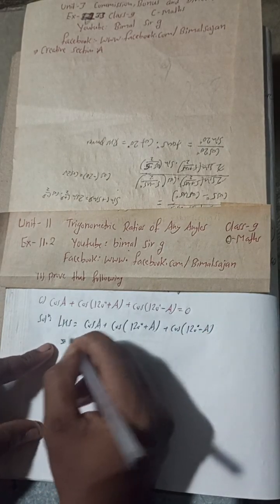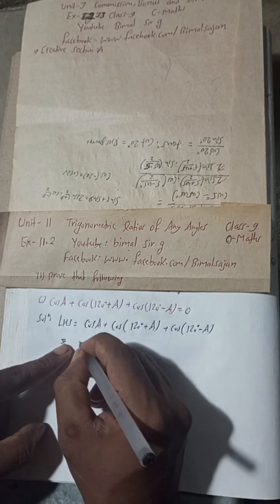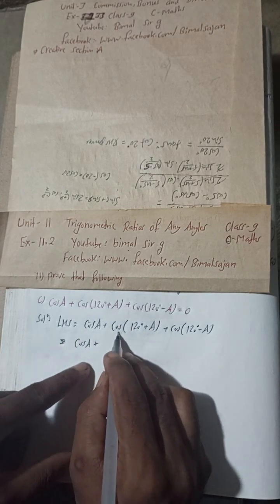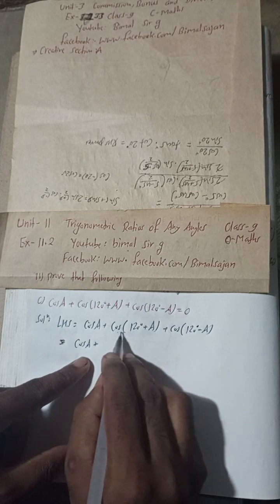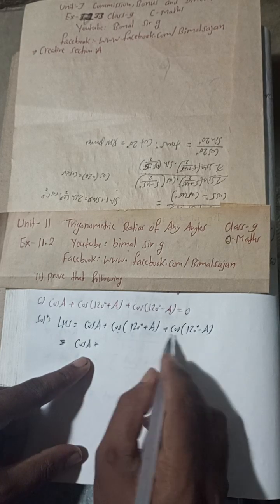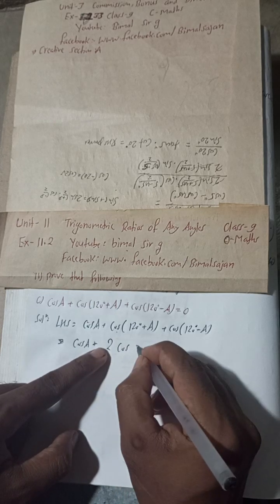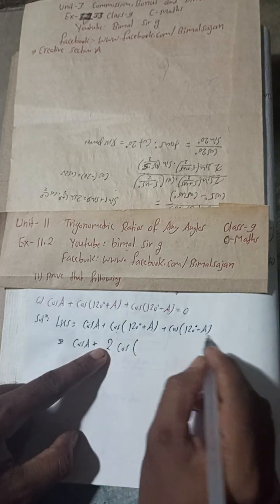Now this is here Cos A, Cos A as it is plus. Now this is formula for what? Cos A, this is Cos C plus Cos D. So Cos C plus Cos D formula will be what? 2 Cos C plus D. So this is C and this is D.